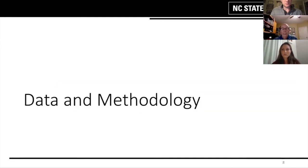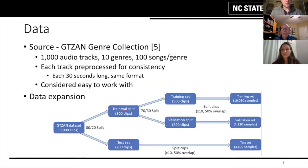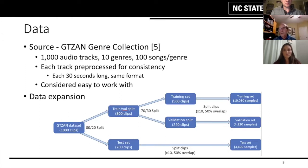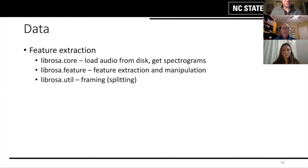You use those differentiation features to be able to classify the networks. For data, we use the GTZAN genre collection — a thousand tracks, 100 songs per genre. Very easy to use, however short data. We basically took a thousand clips and turned it into 10,000 training samples, about 4,000 validation samples, and 3,600 test samples using splitting of the clips. We used librosa as a tool for extracting those features.